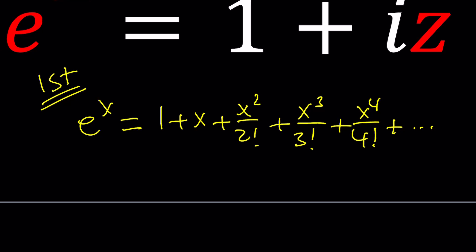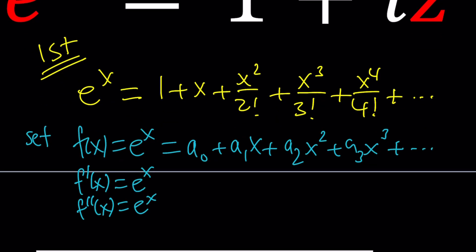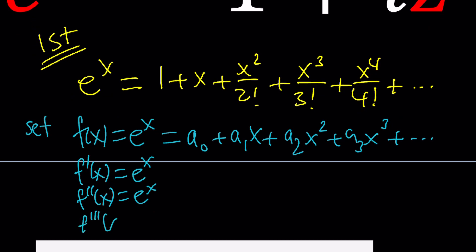You're going to set f of x equal to e to the power x and write it as a sub 0 plus a sub 1 x plus a sub 2 x squared plus a sub 3 x cubed as a power series. We're going to differentiate this function a few times and every time we're going to get e to the x. You can do this infinitely many times you're going to get the same thing.